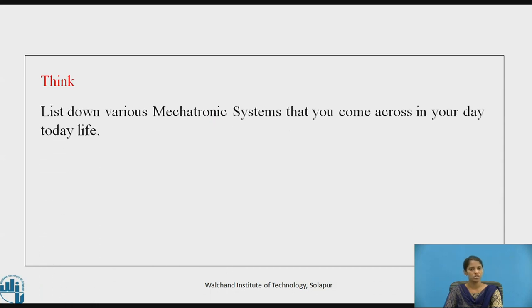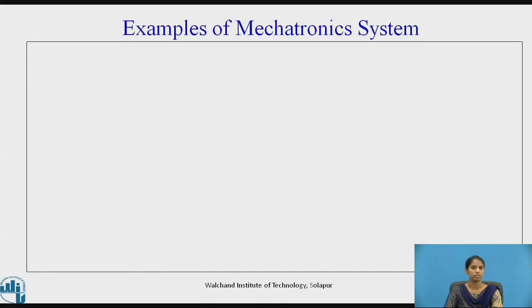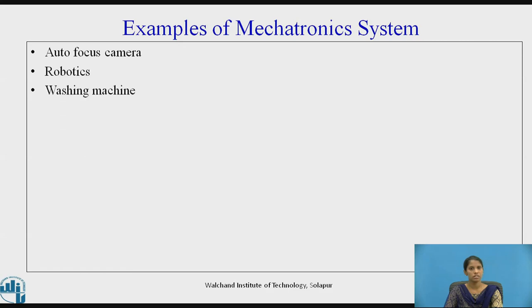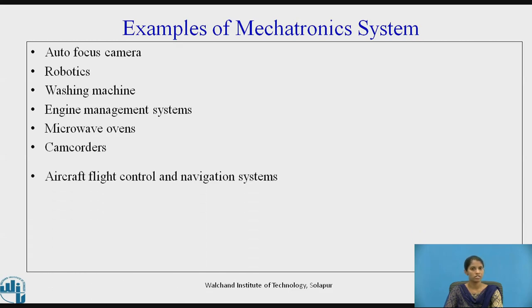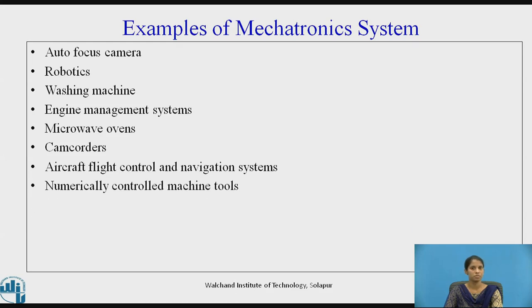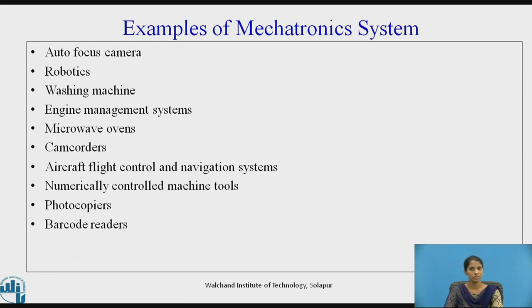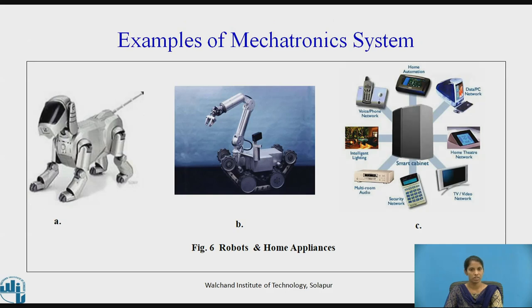Pause the video and list down various mechatronic systems you come across in your day-to-day life. Let us see a few examples of mechatronic systems: autofocus cameras, robotics, washing machines, engine management systems, microwave ovens, camcorders, aircraft flight control and navigation systems, numerically controlled machine tools, photocopiers, and barcode readers. Most electronic home appliances and various robots are examples of mechatronic systems.